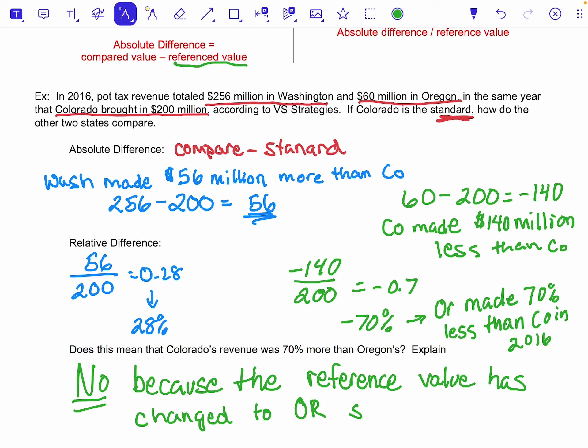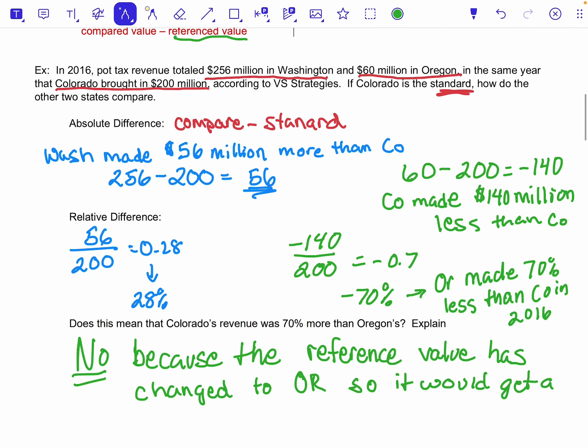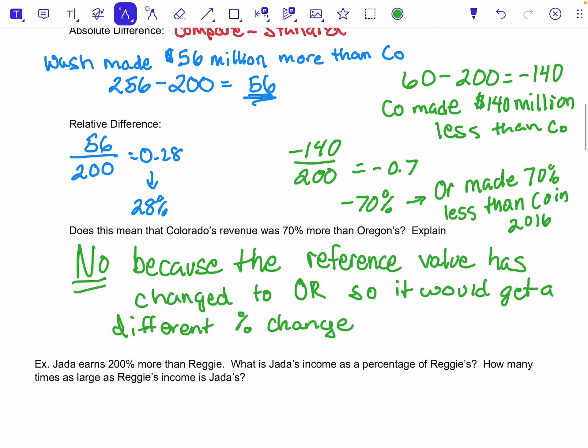To Oregon, so it would get a totally different percent change. And that's important to keep in mind. So if I wanted to figure this out, just so you know, instead of the negative 140, it would have been the positive 140 absolute change.